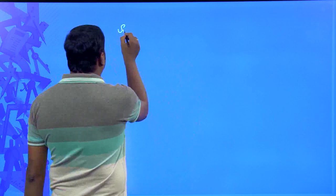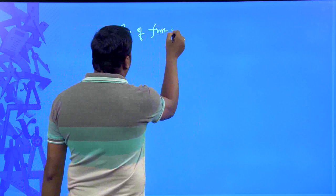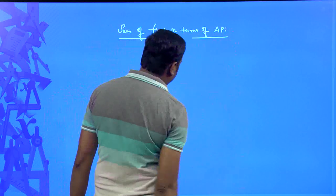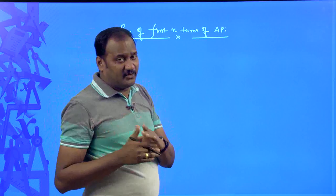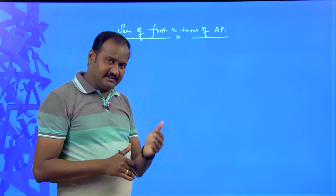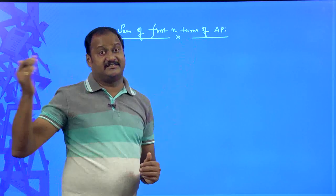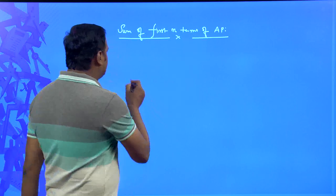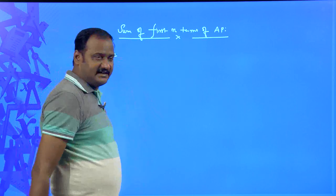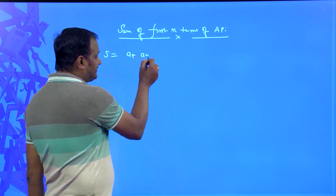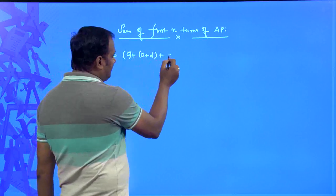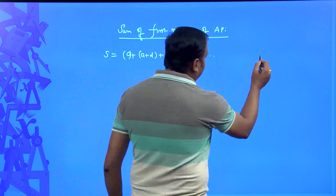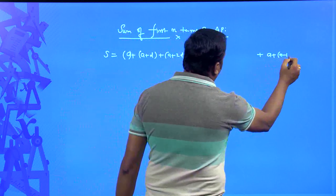The concept we are going to discuss is the sum of first n terms of an arithmetic progression. The general form of an arithmetic progression is: A, A+D, A+2D, A+3D, and so on up to n terms. The nth term of an arithmetic progression is A + (N-1)D. I am giving the name S to this sum.